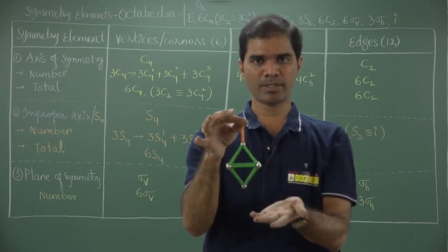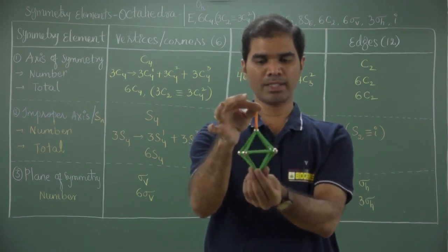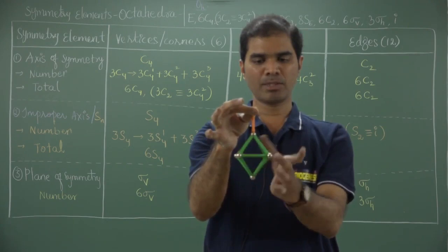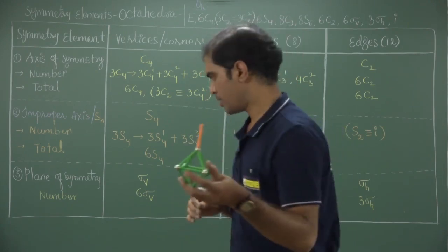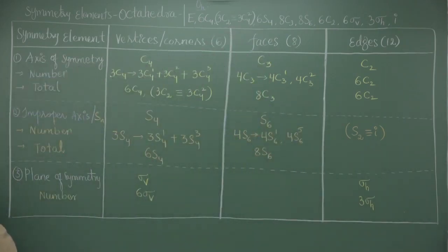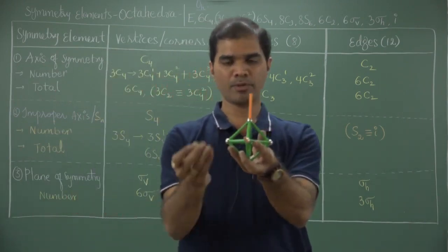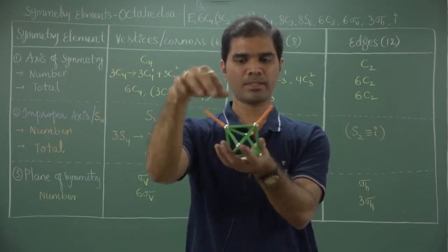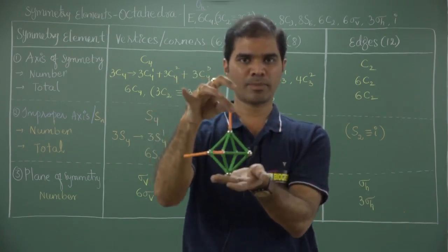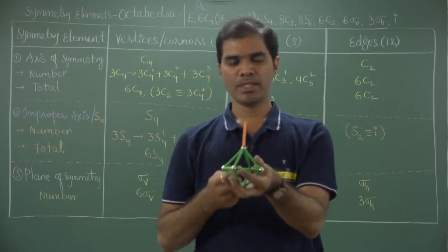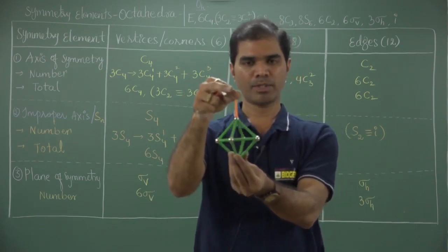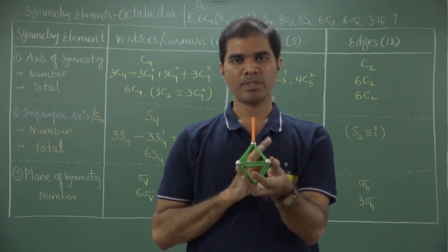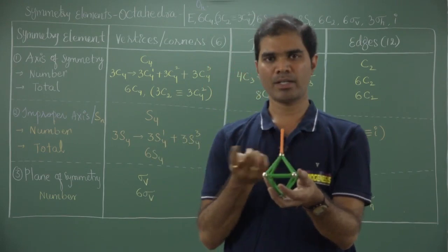Starting from the corners: if I choose the opposite pair of corners, C4 is possible. Since there are 3 pairs of corners, 3 C4s are possible. Each C4 generates C4¹, C4², and C4³, giving 9 C4 elements altogether. C4² is just equivalent to a 180-degree rotation, which is a C2. So out of the 9 elements, 6 are simple C4s (C4¹ and C4³ from each axis), and 3 are C2s generated from C4². This C2 generated from corners is different from the C2 through edges — do not confuse them.